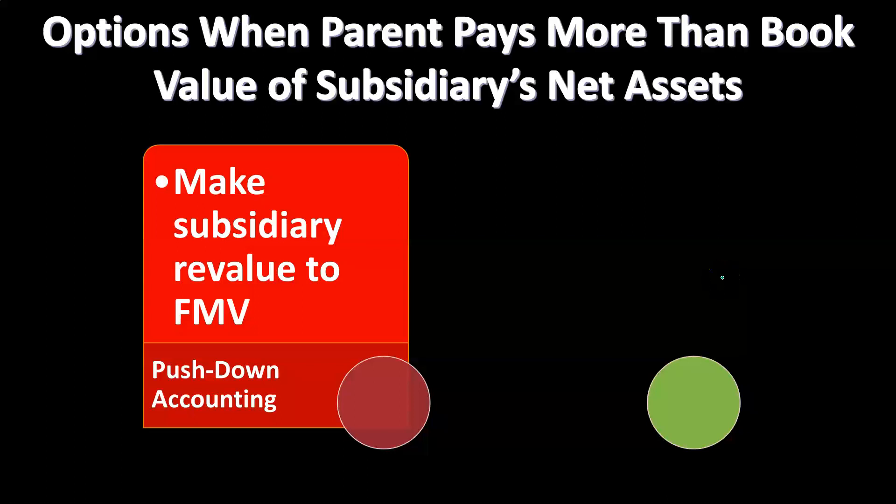The concept of push down accounting takes place when we have a parent-subsidiary relationship and the purchase price, when the parent purchased the subsidiary, was more than the book value of the subsidiary. This can complicate the consolidation process, so we have a couple of different options.